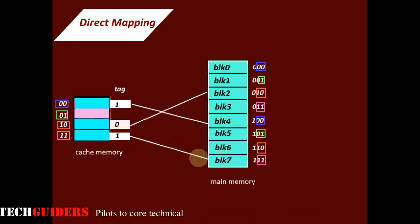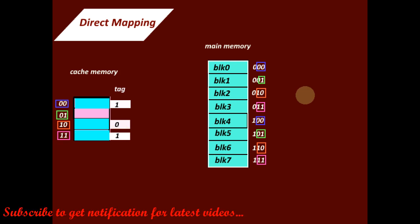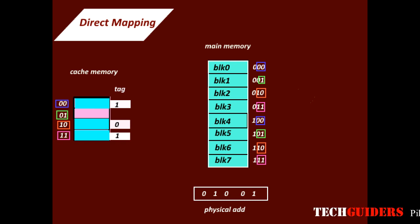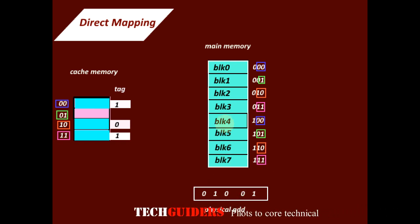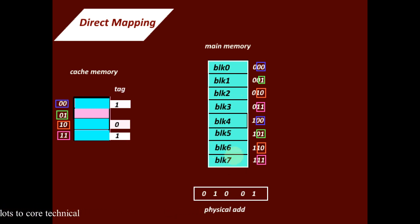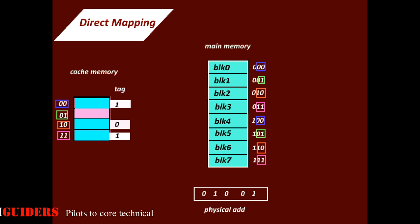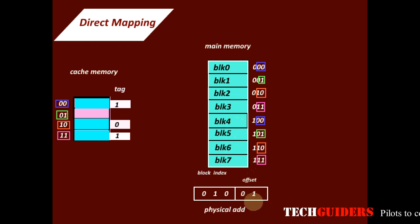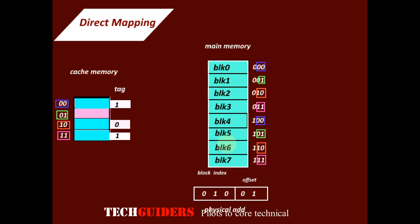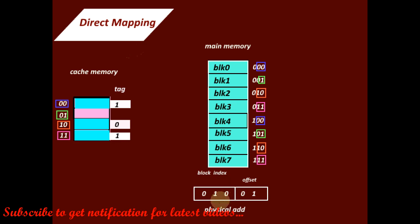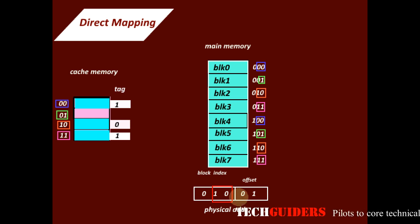From the CPU's point of view, when a physical address is generated it refers to main memory. With eight blocks each having four words, we need two bits for the block offset and three bits for the block index, giving a five-bit physical address. In direct mapping, the least significant bits of the block index determine the cache line to which the block is mapped.